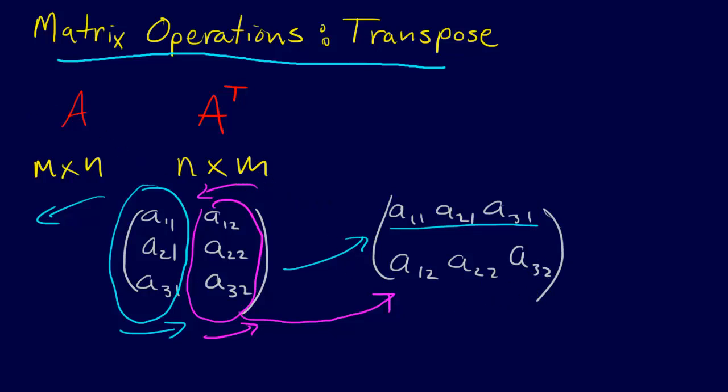And so if this matrix is A, then this matrix is A transpose. And so that's the transpose operation, it's a fairly simple operation, but that's how you do it.